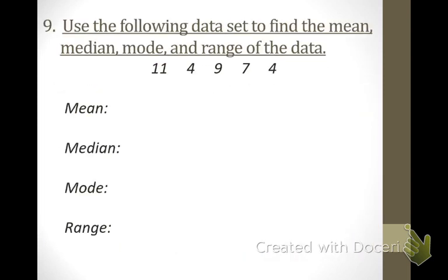One last example — this is a review but you need to know it for your quiz: the mean, median, mode, and range of a data set. What's the first thing you do? Put it in order from least to greatest. When I do that, I've got 4, 4, 7, 9, and 11.